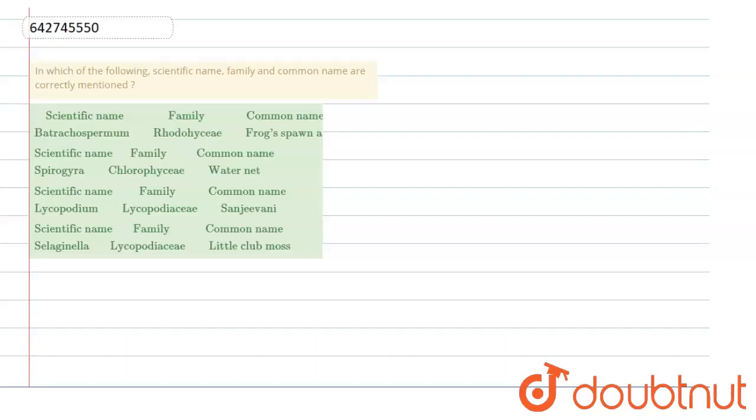Hello students, let's start with the question. The question states: in which of the following scientific name, family and common name are correctly matched?